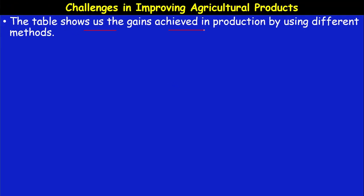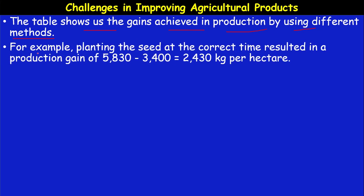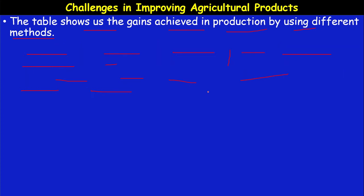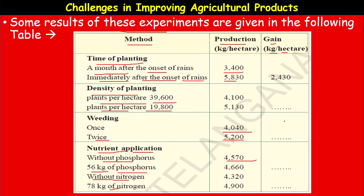The table shows the gains achieved in production using different methods. For example, planting the seed at the correct time resulted in a production of 5,832 versus 3,400, a gain of 2,430 cages per hectare. Calculate the exact gain from each method mentioned in the table and fill in the empty columns.